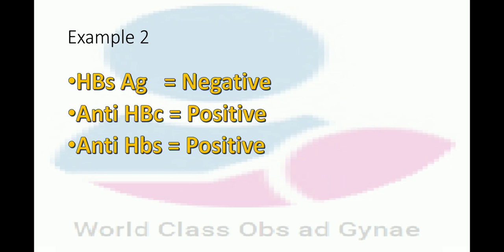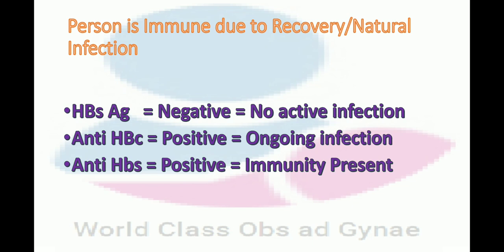Example two: HBs antigen negative, anti-HBc positive, anti-HBs positive. The answer is the person is immune due to recovery or natural infection. HBs antigen is negative — no active infection. Anti-HBc is positive — ongoing infection history. Anti-HBs is positive — immunity is present. So the person is immune due to recovery or natural infection.